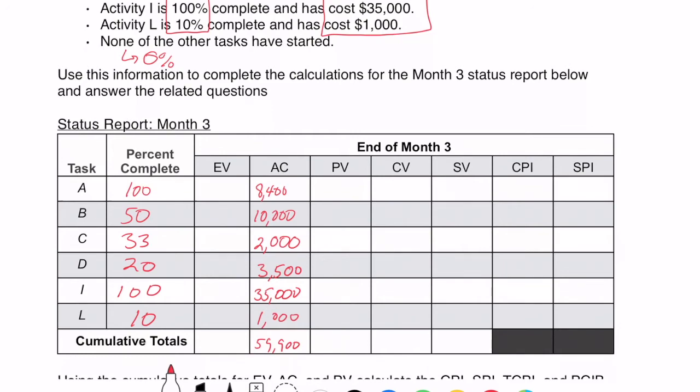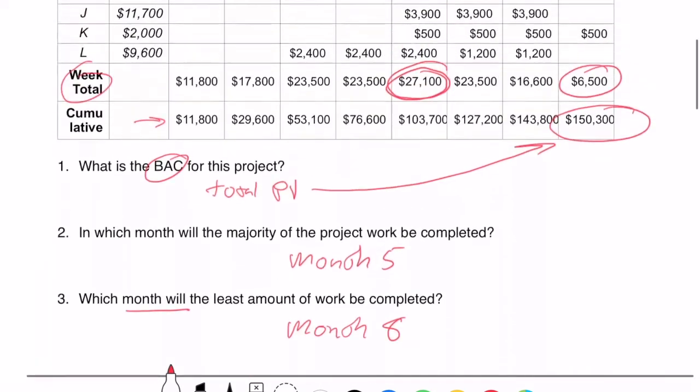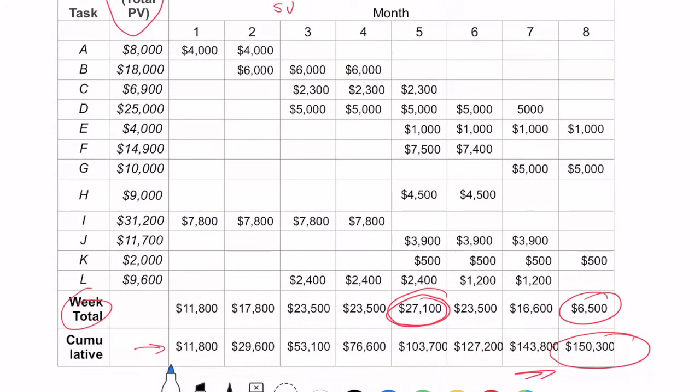Now to look at the PV, what we're going to do is actually look at the end of month three, up here. So we're going to draw a little line at the end of month three. Yeah, very straight line, but you get the idea here. We're going to draw this line and we're going to look at what should have occurred. So for task A, we should have had $4,000 plus $4,000. That's about $8,000. For task B, $6,000 plus $6,000. That's about $12,000. This would just be $2,300. Then this would just be $5,000. For all these other ones, like for E, F, and G, those would be nothing, right? Because we weren't planning to have anything done on those.